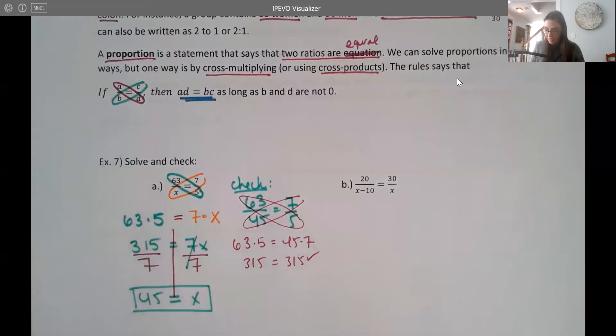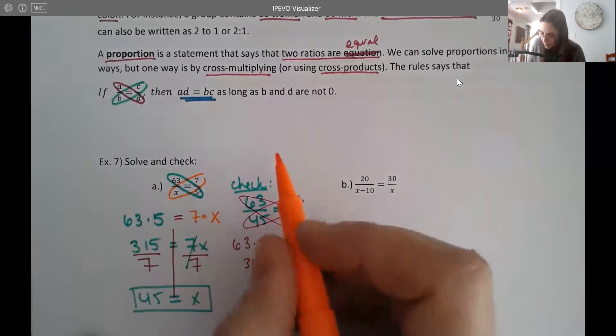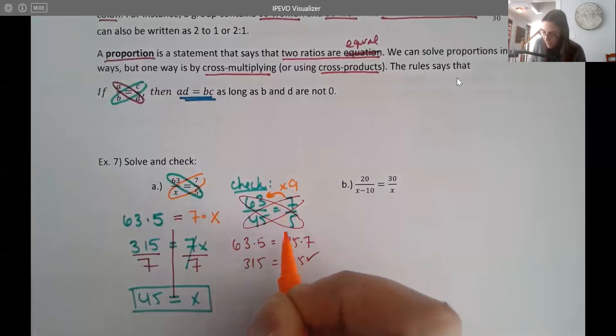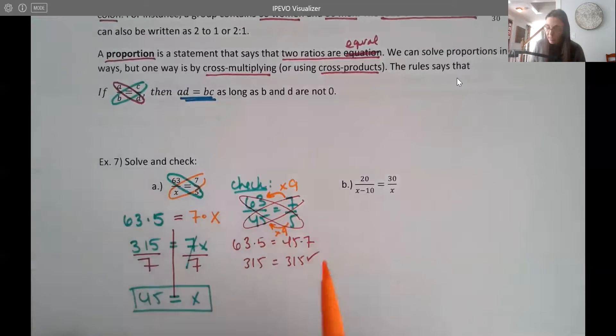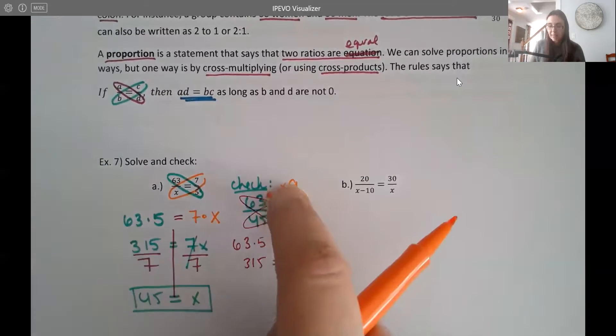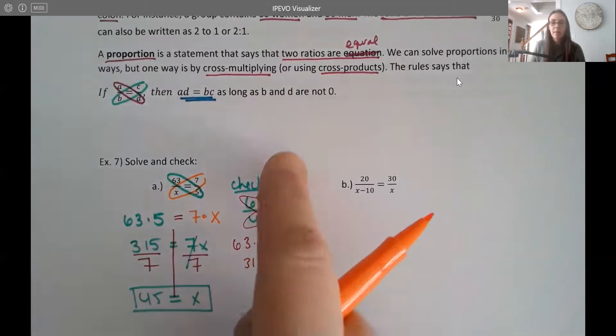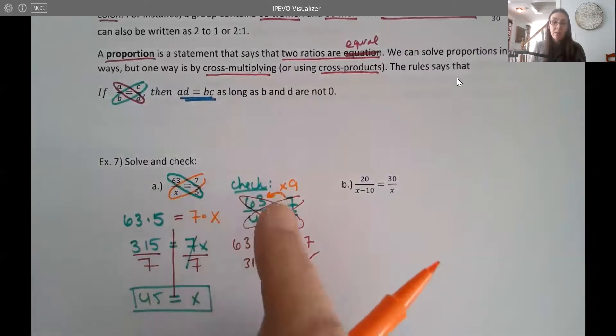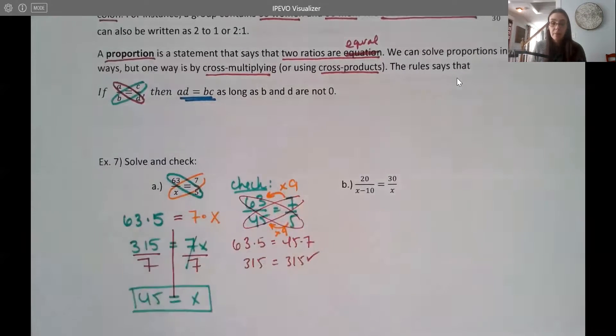Another way you could check is to actually look at the multiplication between the ratios. So notice that 7 times 9 is 63, and 5 times 9 is 45. So if you see that same change as well, whether it's a multiplication change or a division change, it doesn't matter. Then that also checks that you have the same fraction or ratio, because basically you're just simplifying. This is the simplified version of this one.